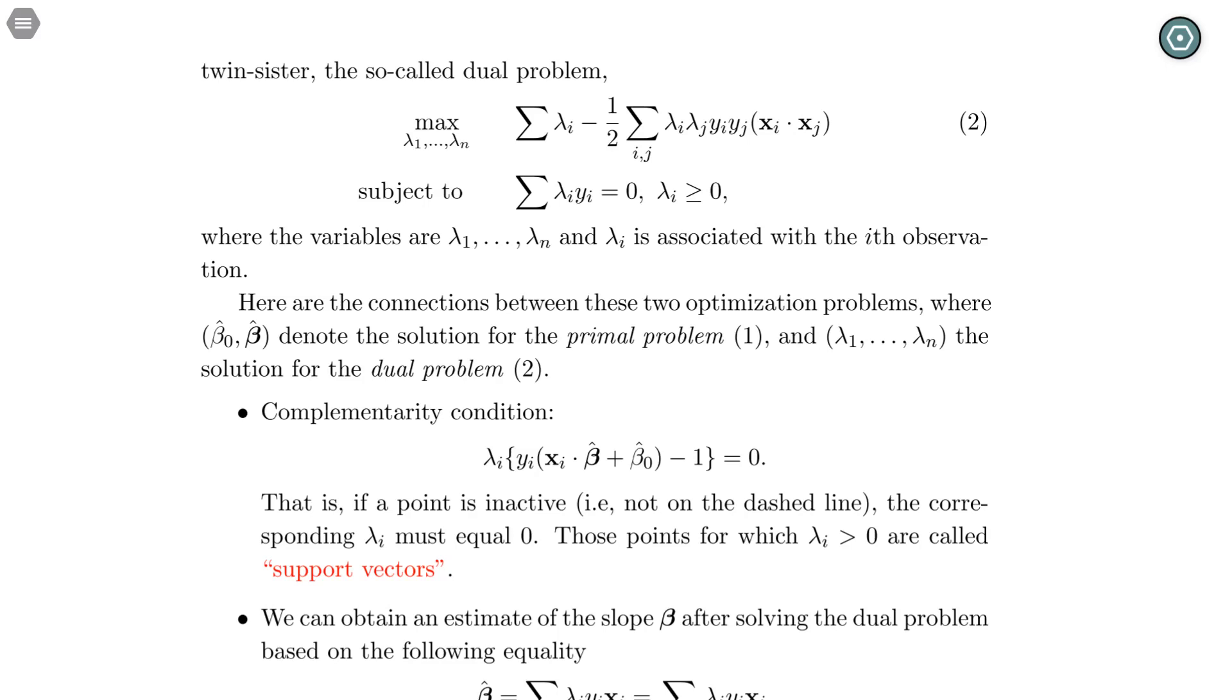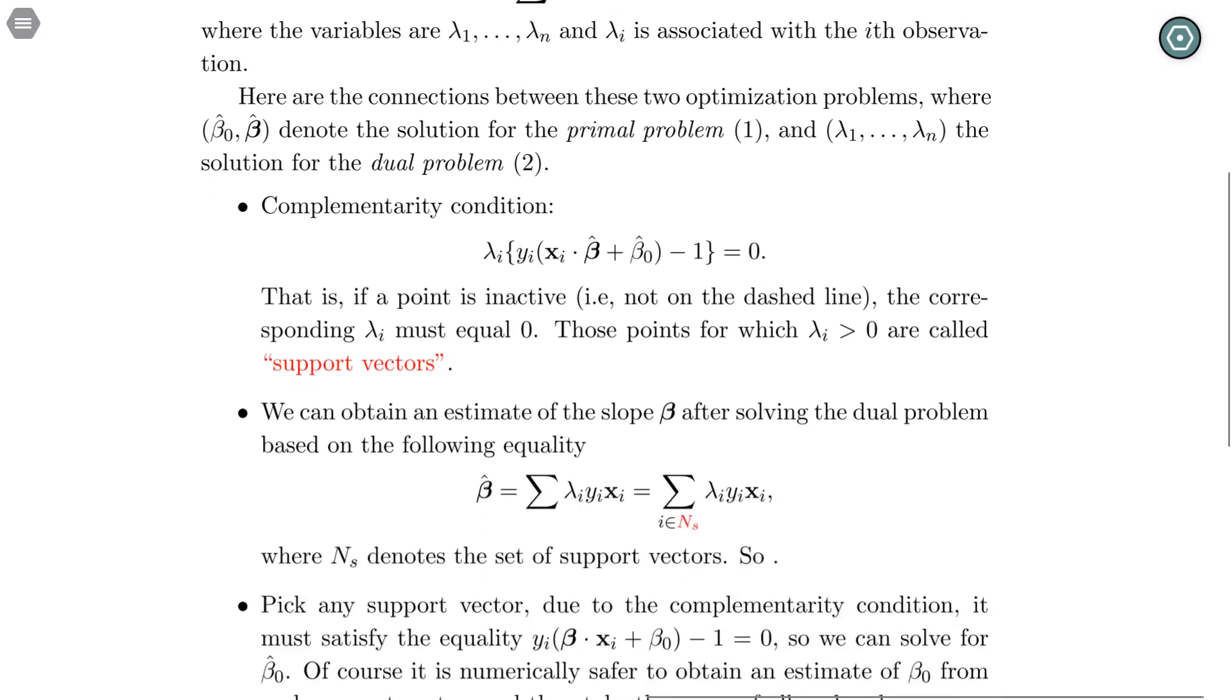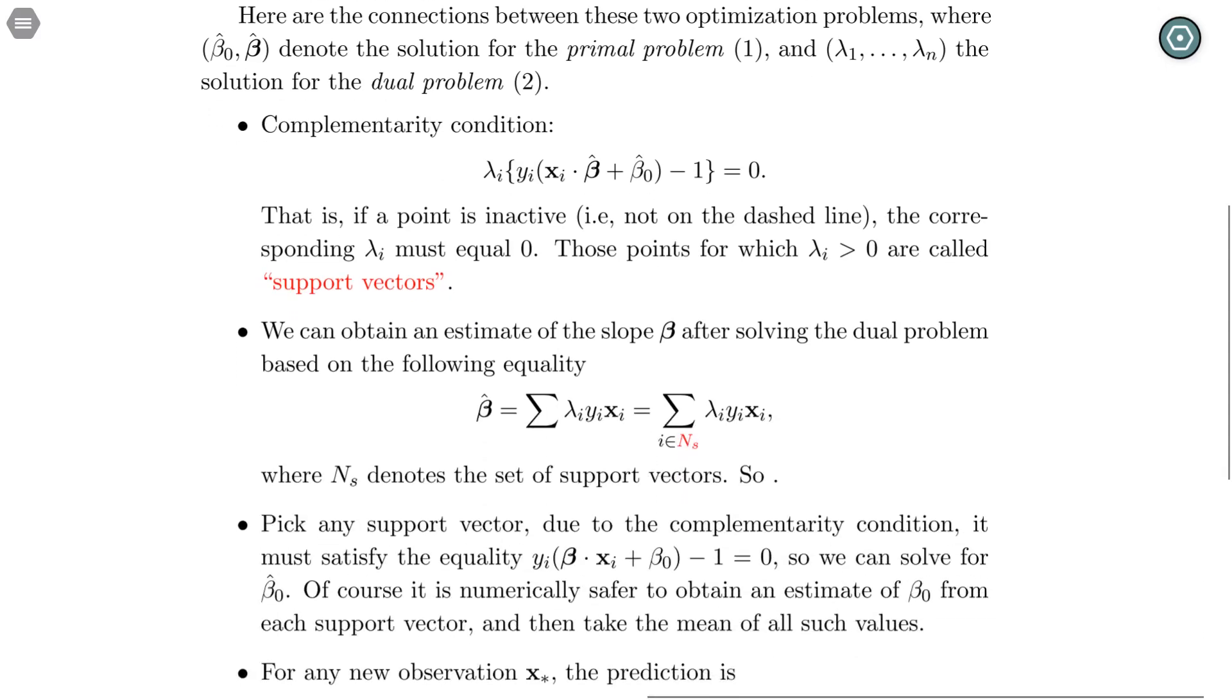Once we solve lambda_i's through the dual problem, we can retrieve the slope beta and the beta_0 for the primal problem by using the KKT conditions.